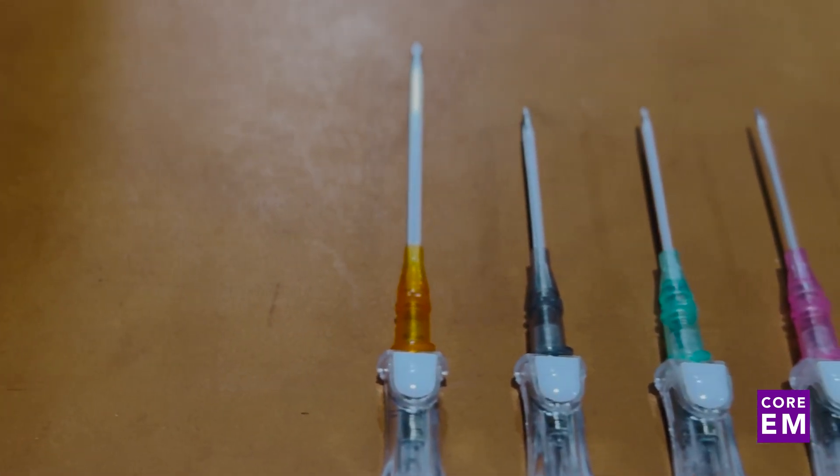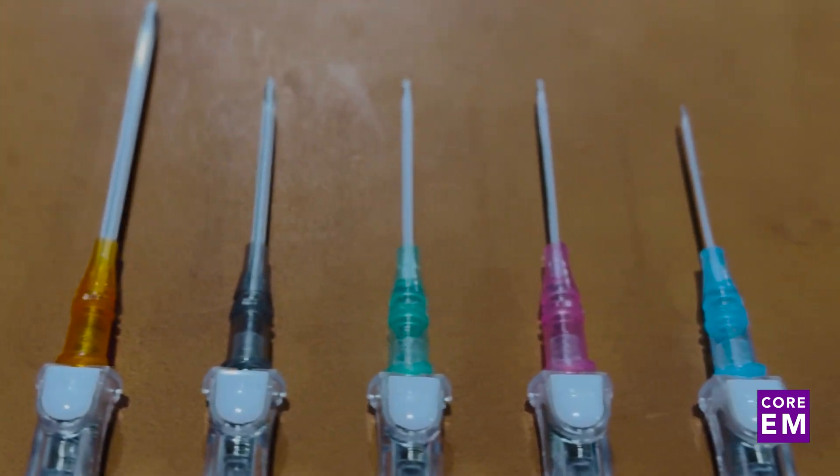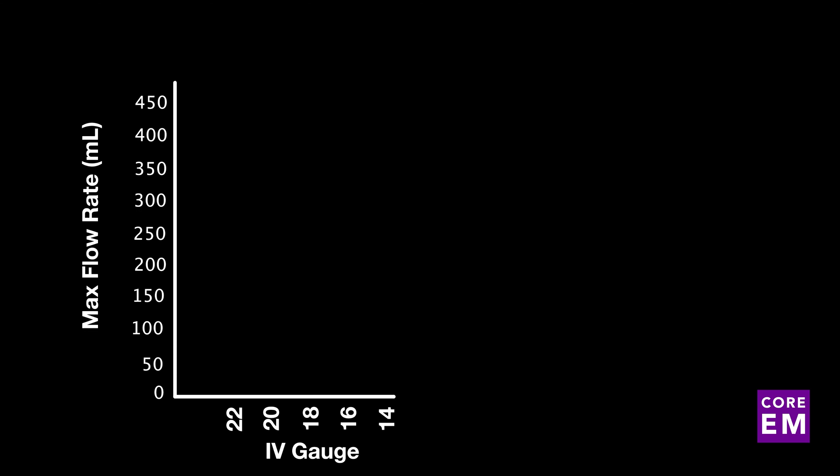The longer the catheter, the lower the maximum flow rate. And the larger the diameter, the higher the maximum flow rate. And this relationship is not linear. It is proportional to the fourth power. So in other words, if you double the diameter, then you will have a 16-fold increase in maximum flow rate.